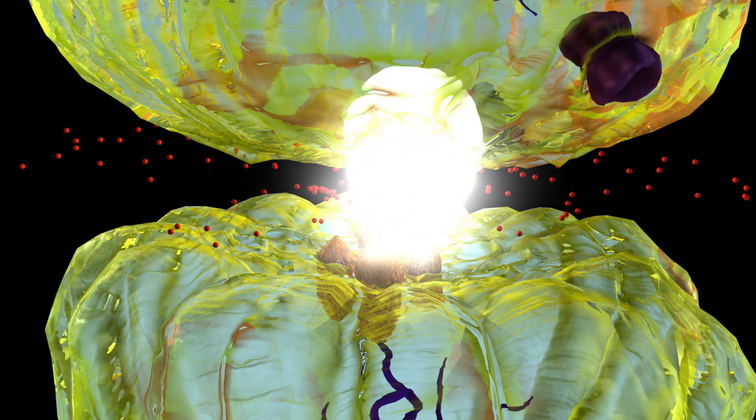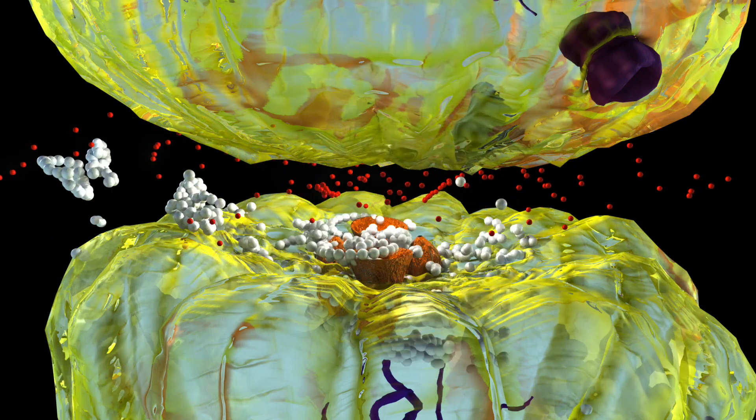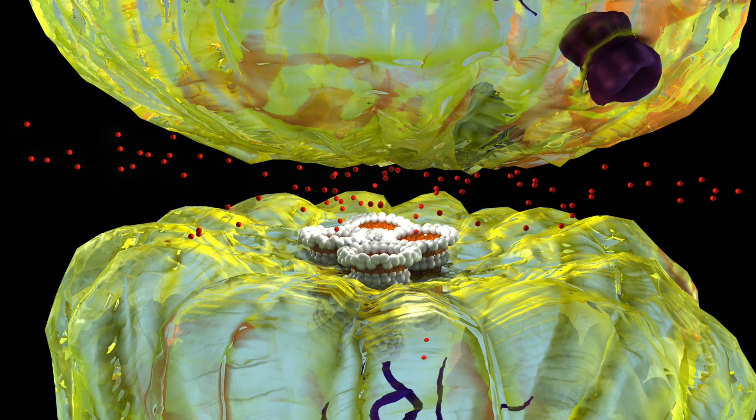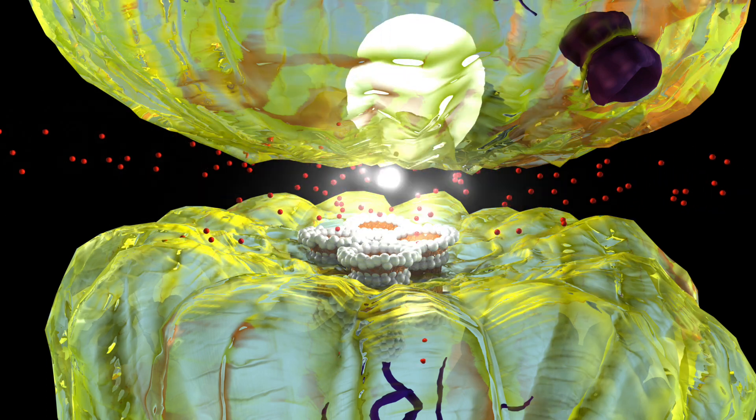Ezogabine binds to the KCNQ potassium channel and opens it. This allows more potassium to enter through the channel.